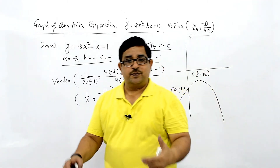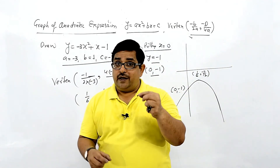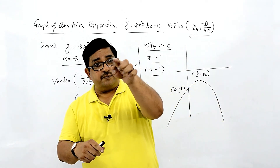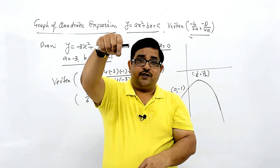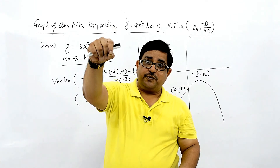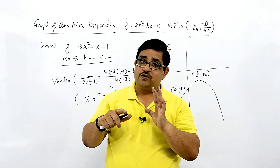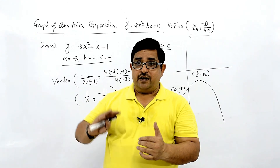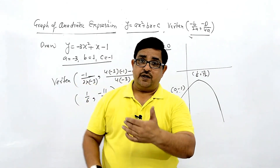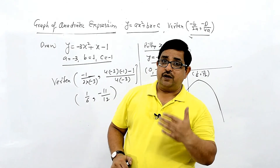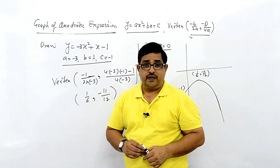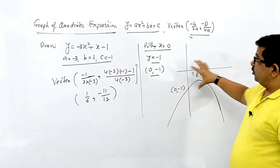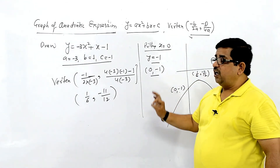This is the whole graph. Mainly you should know where the vertex is — that is the most important point, the vertex coordinates. The other key thing: if A is positive, the mouth opens upward; if A is negative, the mouth opens downward. With this, you can draw any such graph.